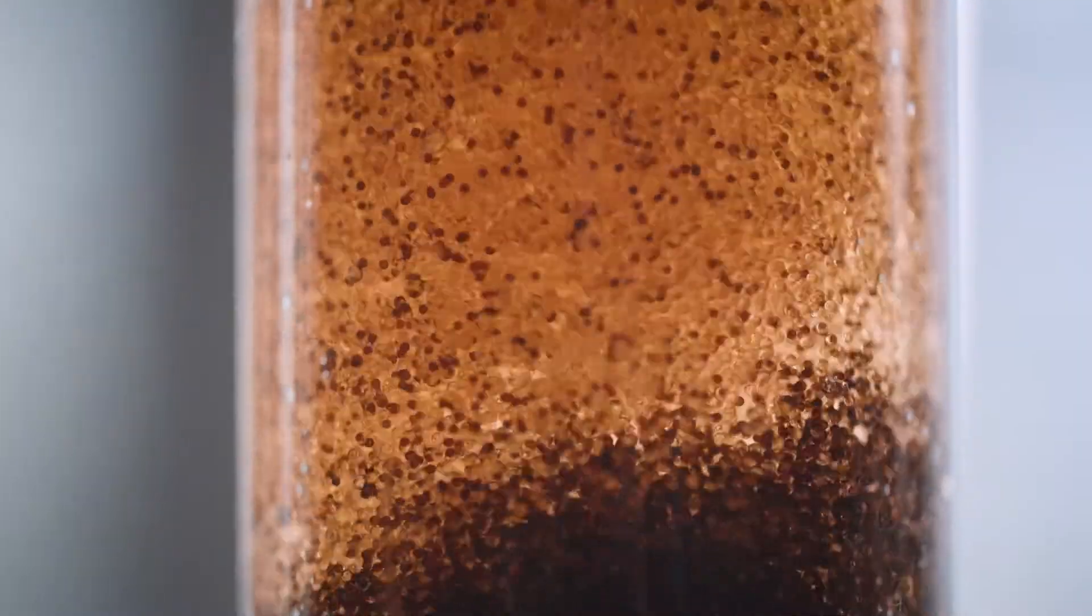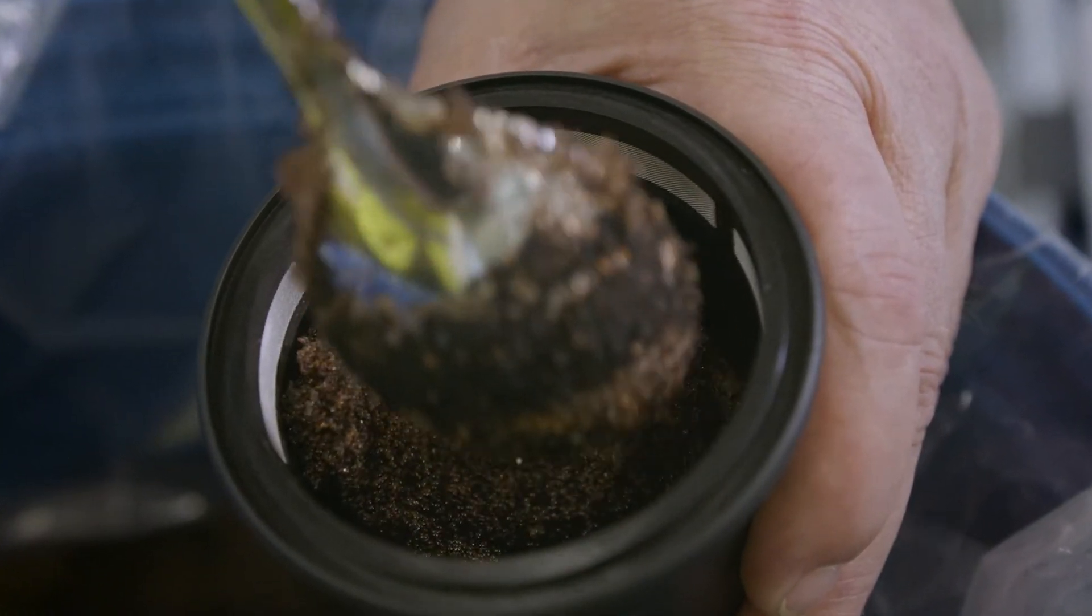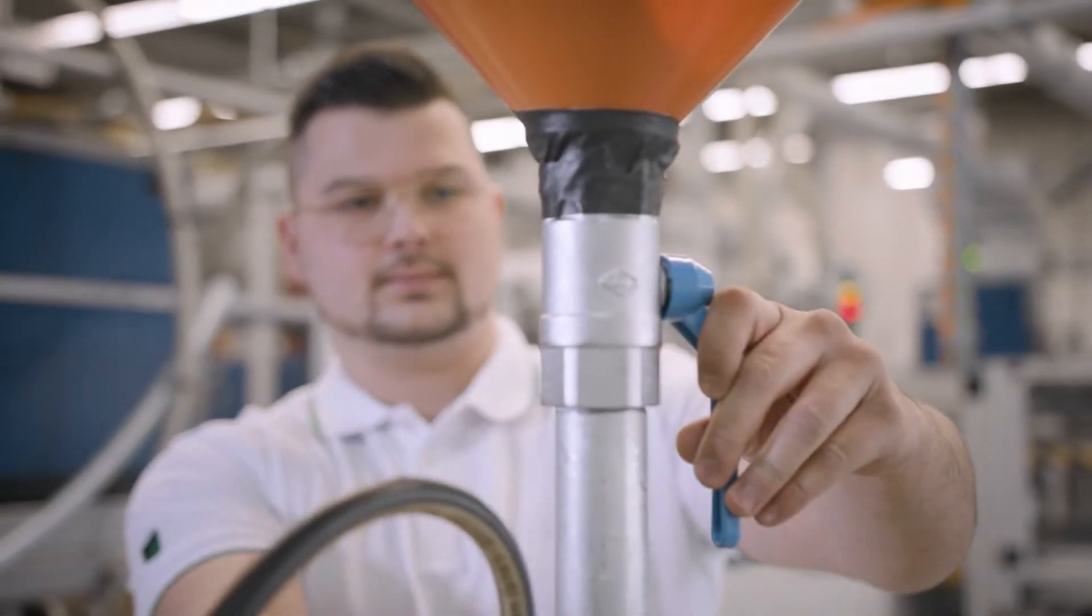So these resins are like small beads. You have to fill them in a cartridge. That is completely different from what we normally do. Normally we pleat filter media, right? And so this is a production process we had to develop with our colleagues in Marklkofen.